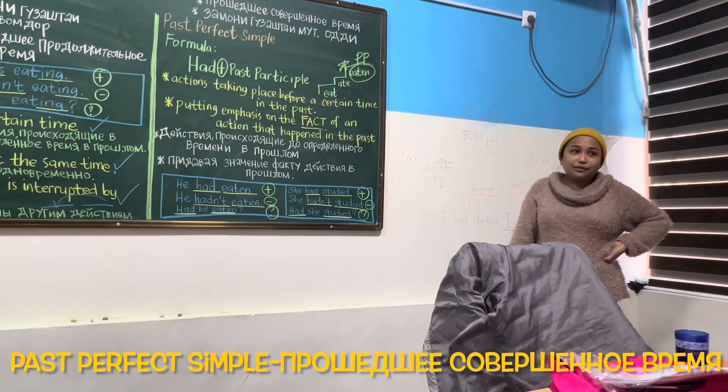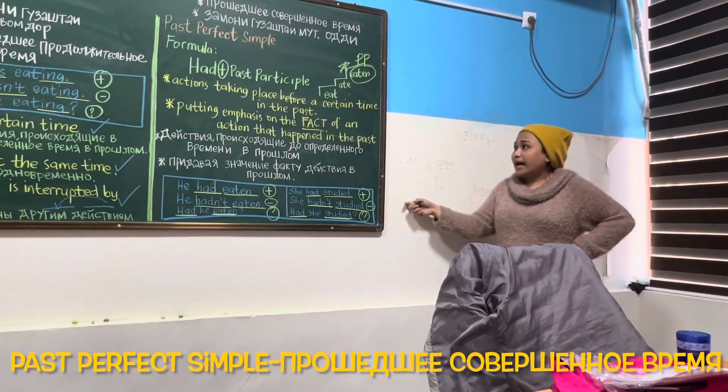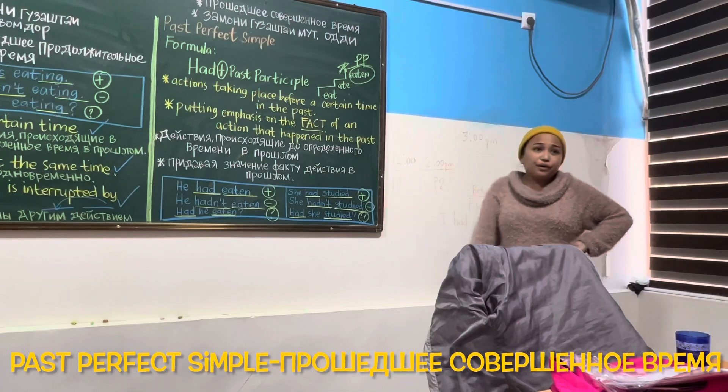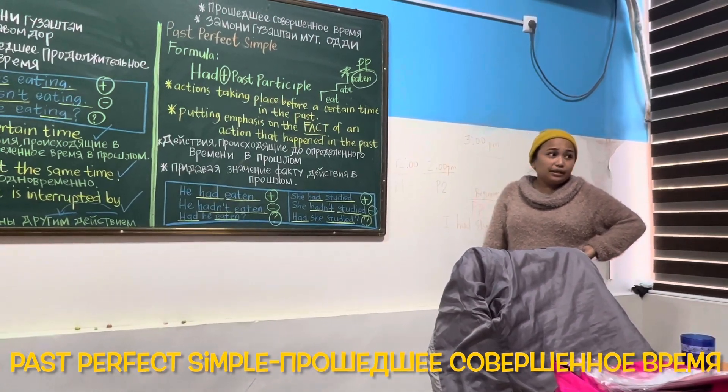Had gone — past perfect. I had gone to school at 12 and I went to Faridun at 2. Very good. Now Muhammad, past perfect — to Faridun.